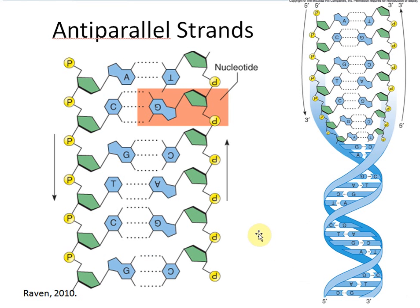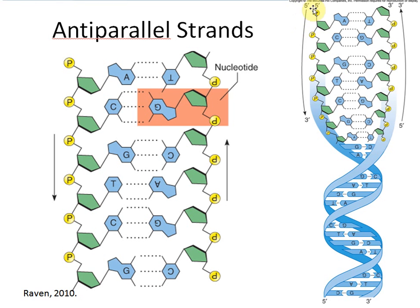Looking more closely at DNA structure, the strands are anti-parallel — one strand goes in the five prime to three prime direction, and the other goes three prime to five prime. In DNA replication, these two strands separate and matching base pairs are attached one nucleotide at a time, synthesized in the five prime to three prime direction. This directionality is critical.